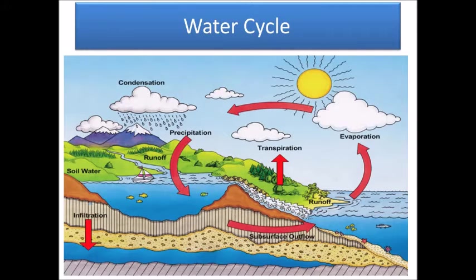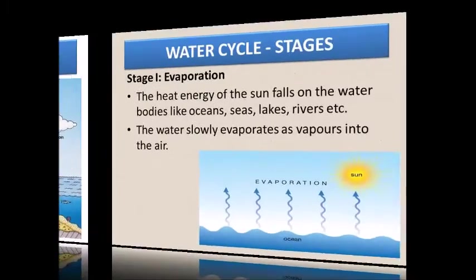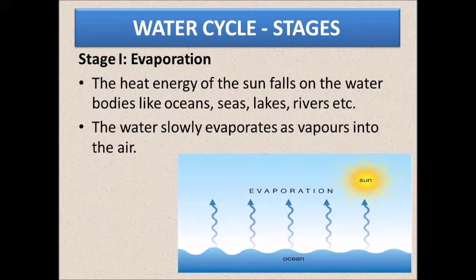The first stage of the water cycle is evaporation. The heat energy of the sun falls on water bodies like oceans, seas, lakes, and rivers. The water slowly evaporates as vapor into the air. You can see water rising as water vapor — that is the first stage of the water cycle.